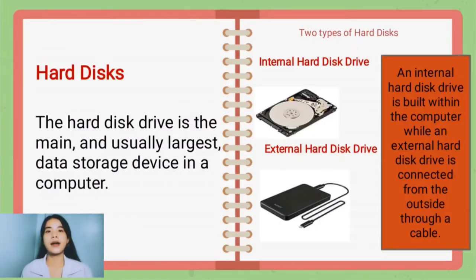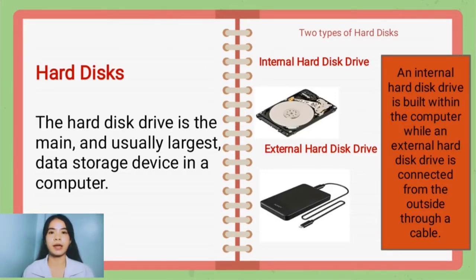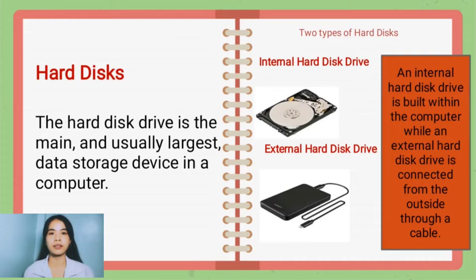This secondary storage device must be plugged in or inserted into the computer in order to be accessed by the system. The hard disk drive is the main and usually largest data storage device in a computer. There are two types: the internal hard disk, which is built within the computer, and the external hard disk drive, which is connected from the outside through a cable.